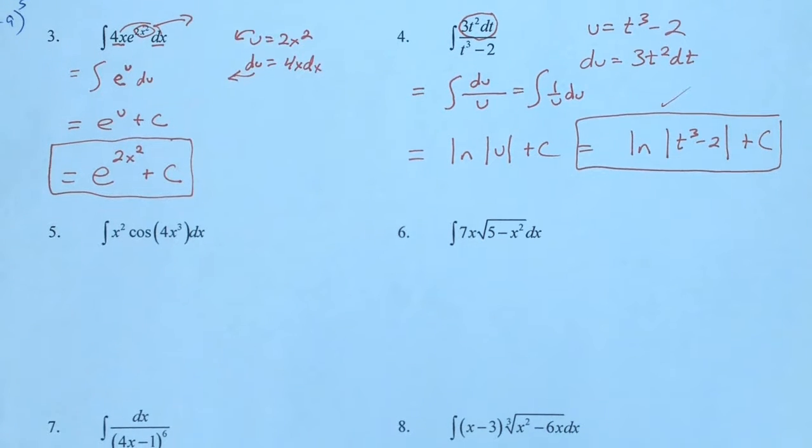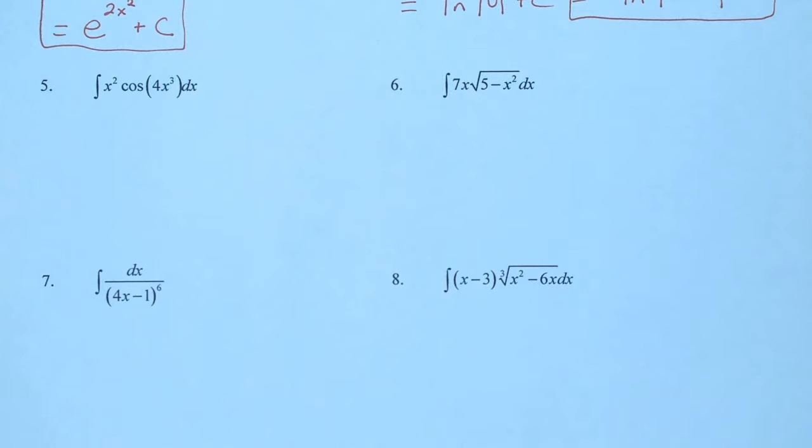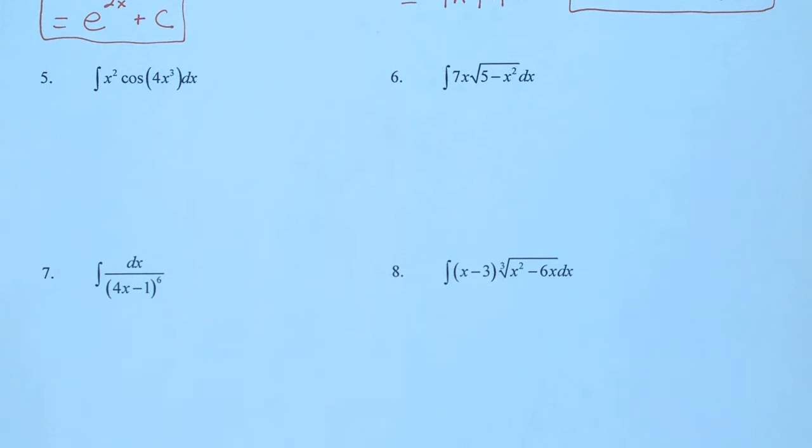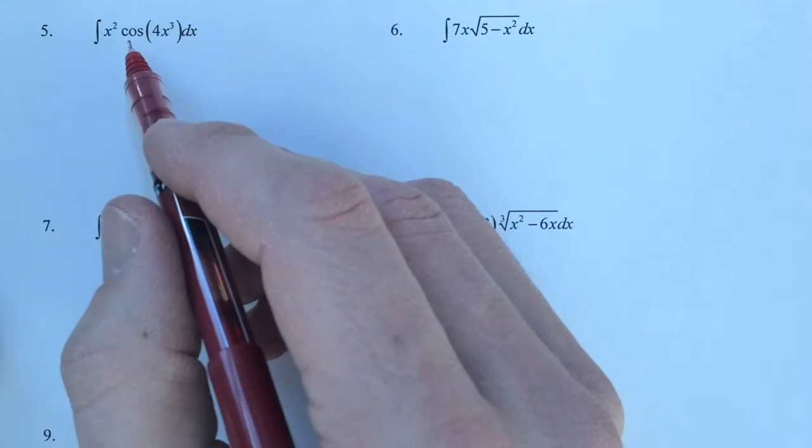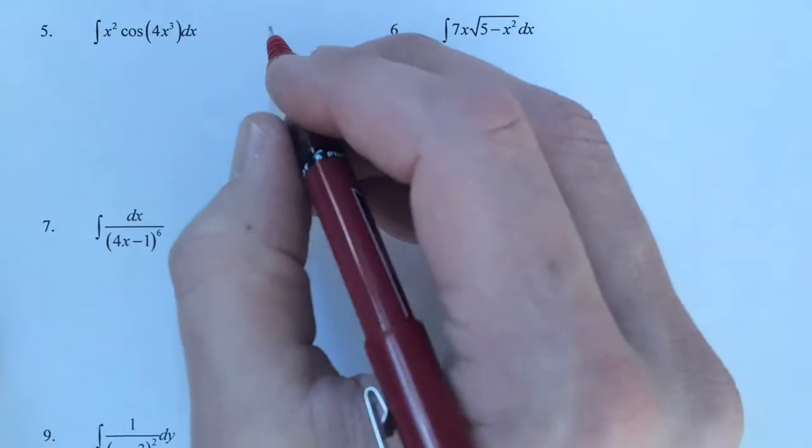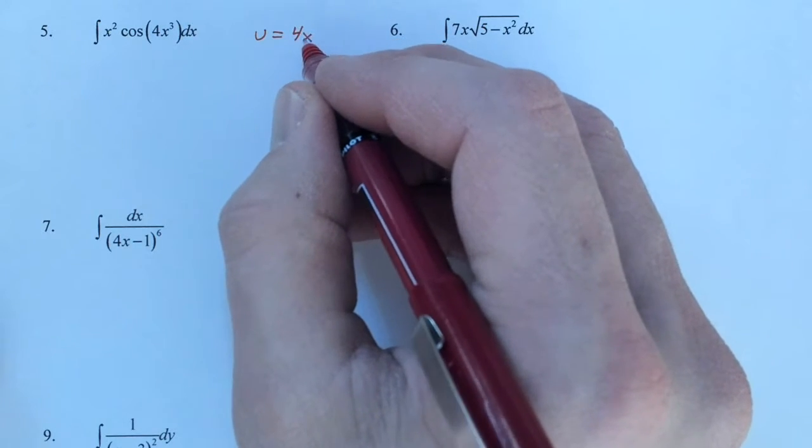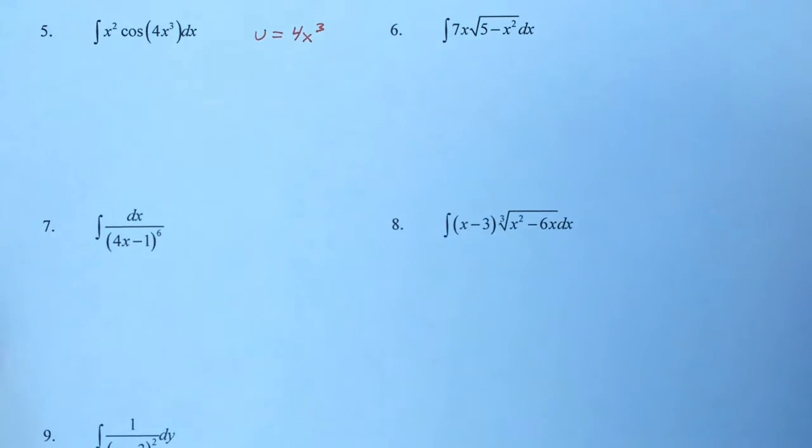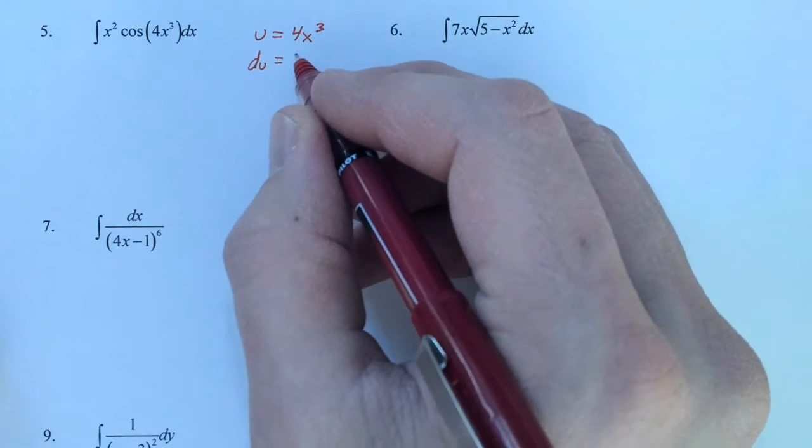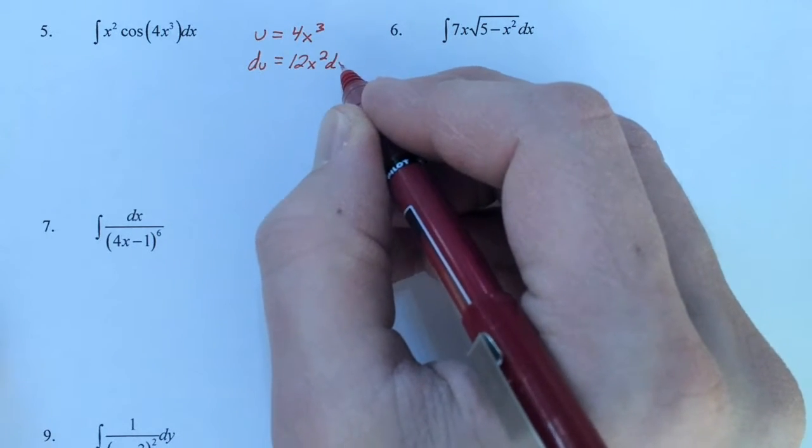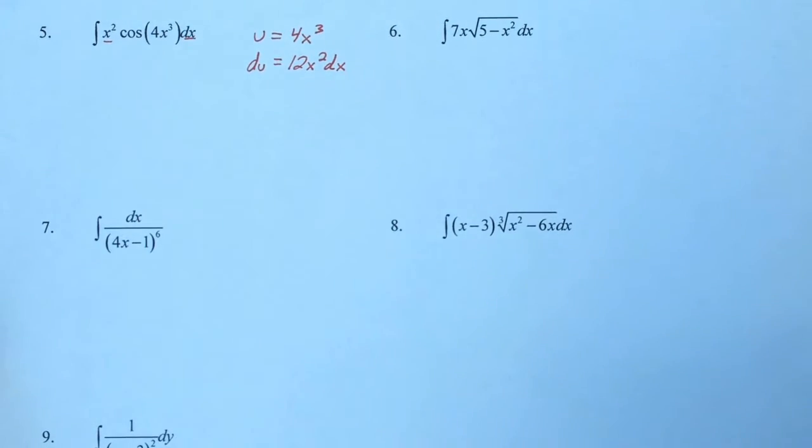Now we start getting into situations where the u still match, we make the u what we want, but the du doesn't match perfectly. So we can see with number 5, we have the cosine of an inner function. So our minds are saying, let's make the inner function our u. And when we do so, we have du equal to 12x squared dx. Now we have the x squared and we have the dx, but we don't have the 12.